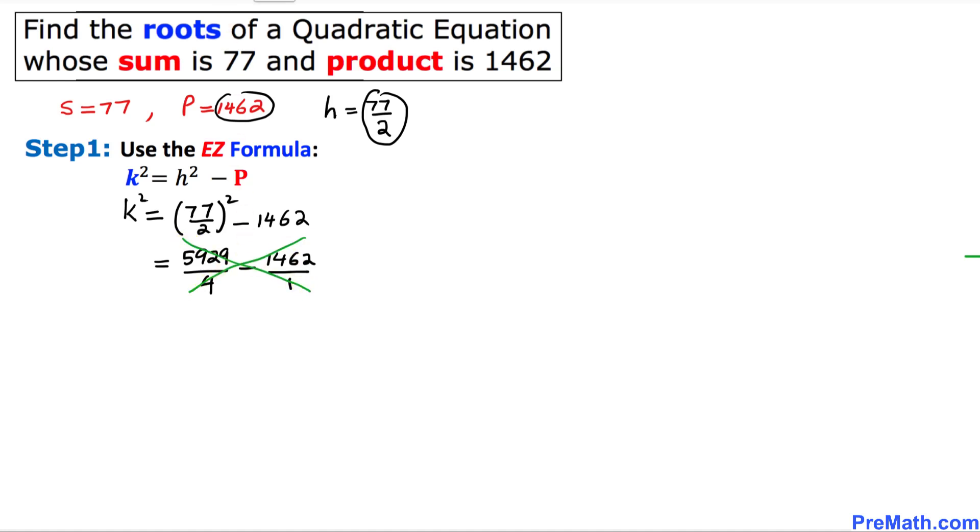I'm going to cross multiply that one. That is going to give us, if we cross multiply this way, 1 times 5929 is going to give us 5929, and then whatever sign we got, this minus, I am going to just keep the same sign minus, and then we are going to multiply 4 times 1462, that is going to give us 5848, divided by now we are going to multiply these denominators, 4 times 1 that is going to give us 4 times 1 is 4.